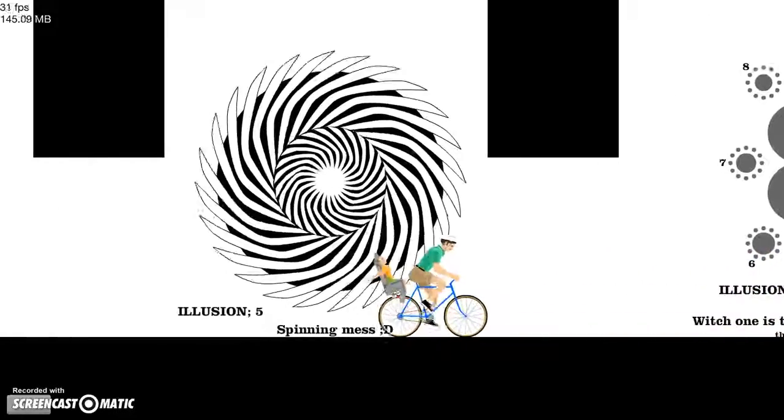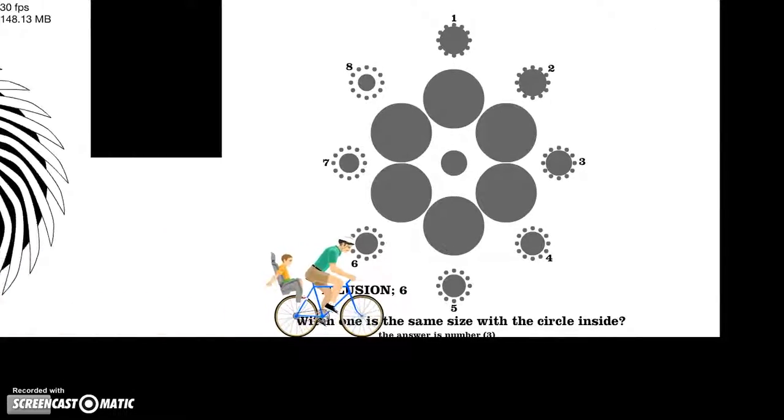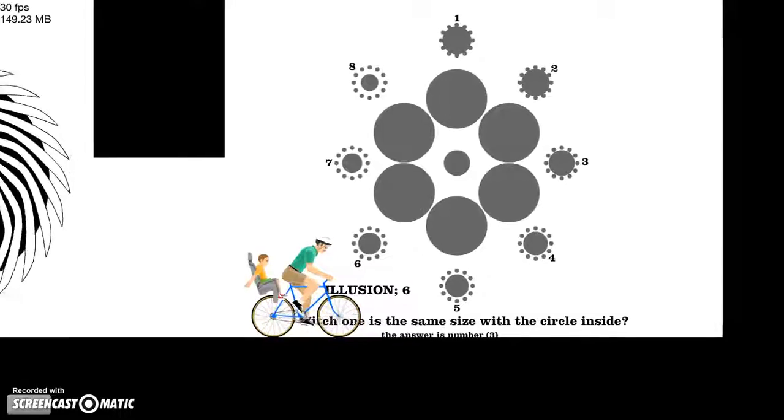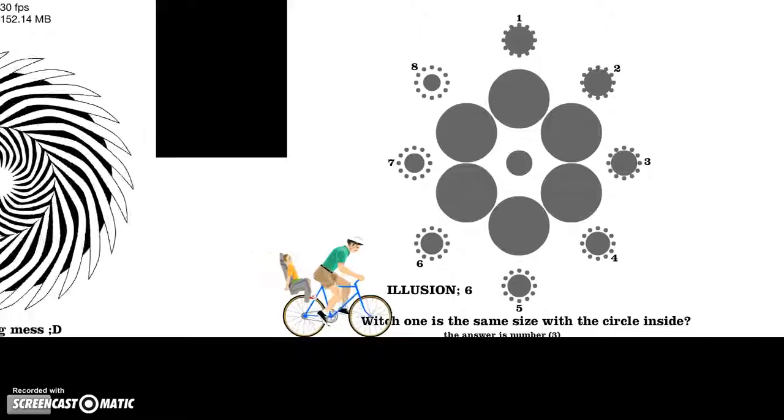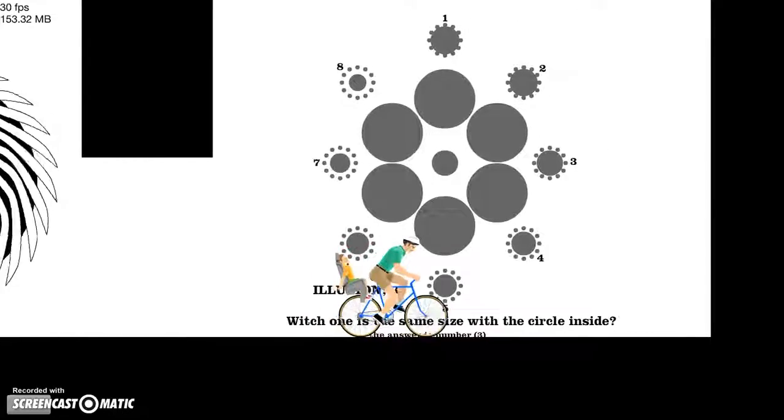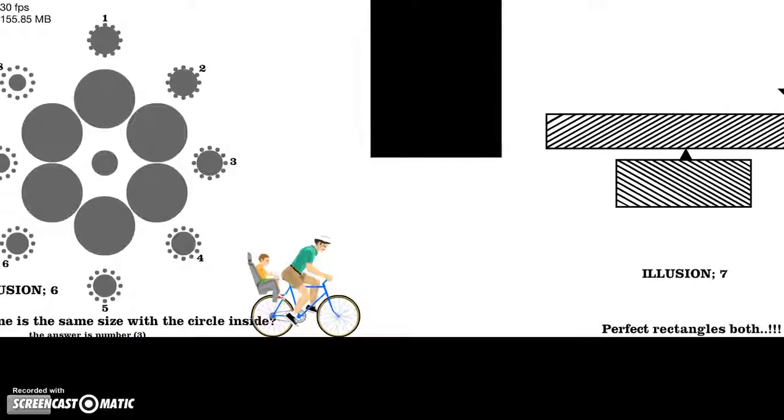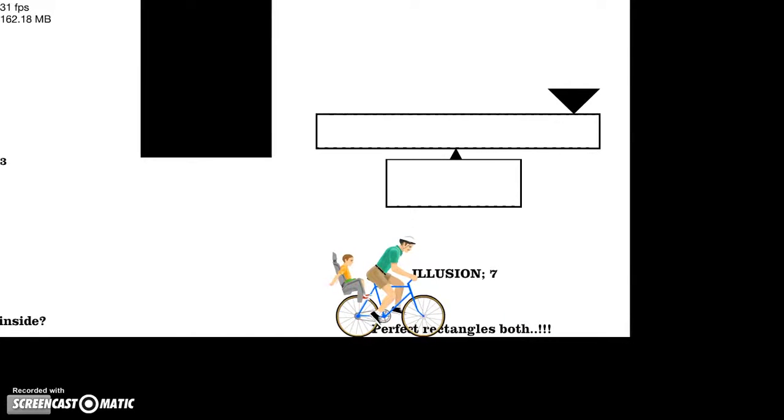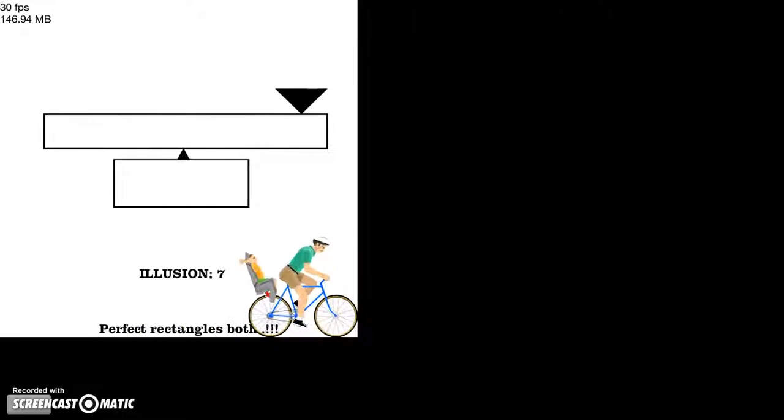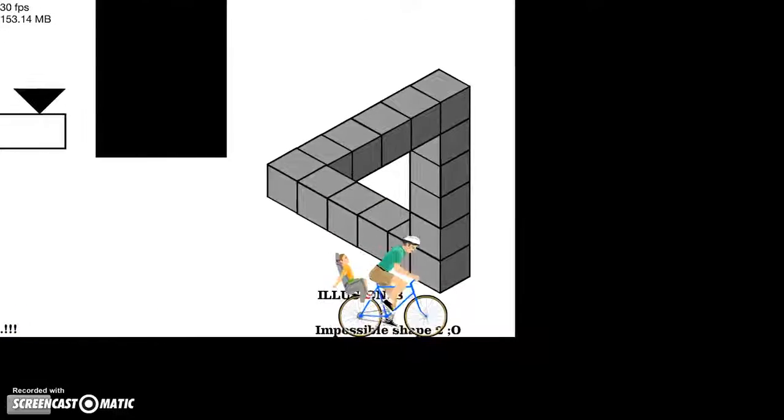Which one is... Oh I've seen these before. They're all the same size aren't they? I think. The answer's number... Wait, what? Wait, there's an answer? I swear number three. I swear they're all supposed to be the same. Oh, same size as the one in... Okay that makes more sense. Yeah, it is number three. Oh silly me. Illusion seven, perfect rectangles both. Yes they are, yeah. That's actually really creepy how that happens. Impossible shape too. Yeah I've seen that before.